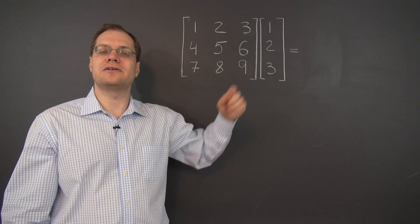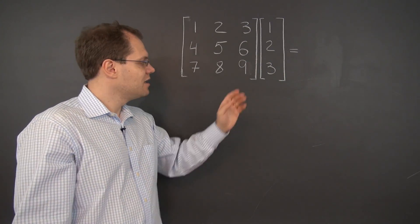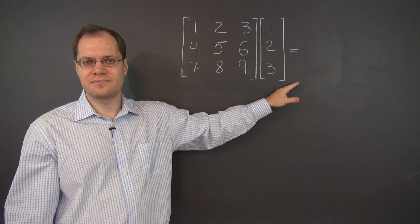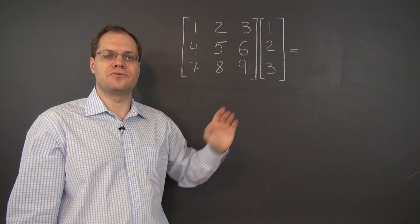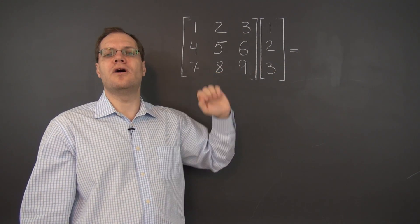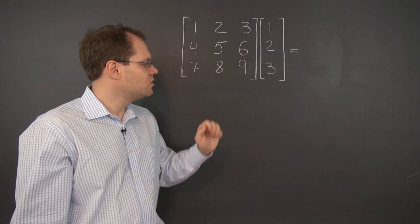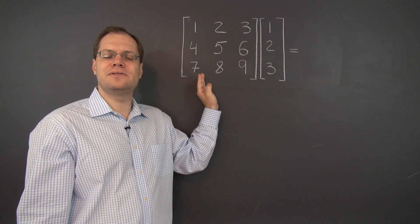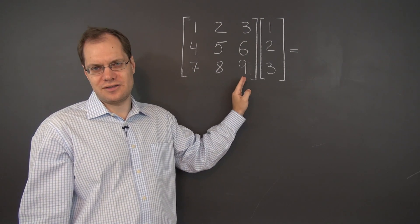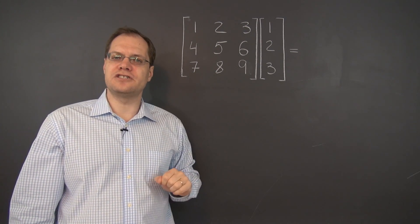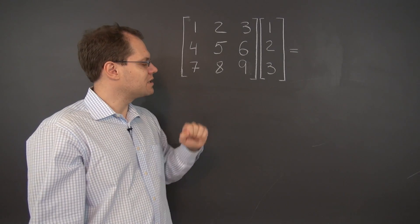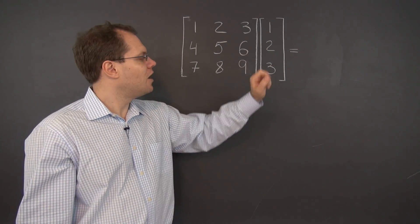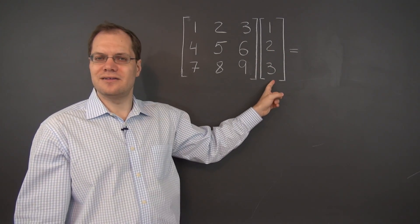As we talk about matrix multiplication and larger matrices, that will remain true. The result will always have to do with linear combinations of the columns of the matrix on the left, where the coefficients come from the columns — in this case a single column — of the matrix on the right.